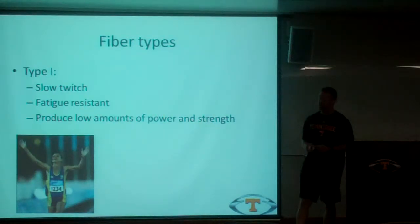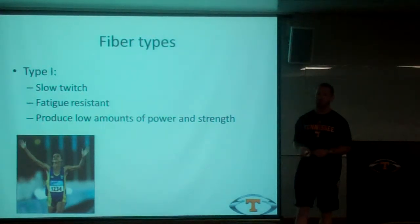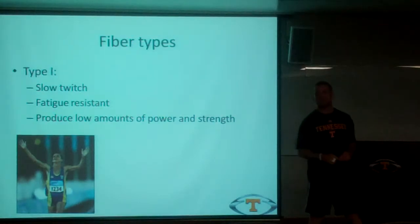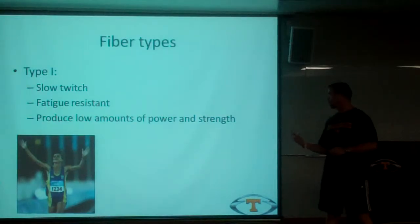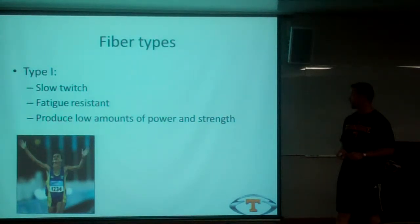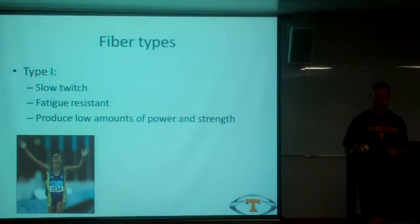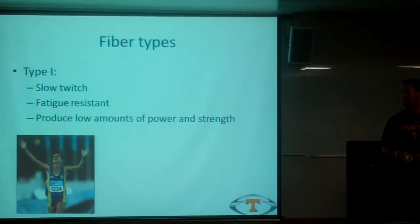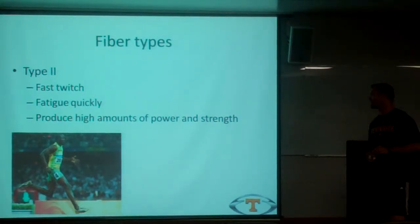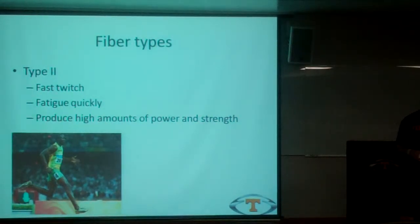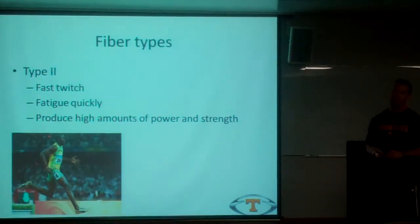Fiber types — in our discussions we sometimes talk about comparing a sprinter to a marathon runner as far as fiber types and muscle mass. Slow twitch, type 1 — they are fatigue resistant. They produce low amounts of power and strength; you build more of those for endurance for that long run. Type 2 fiber, fast twitch — you're going to produce high amounts of power and strength.